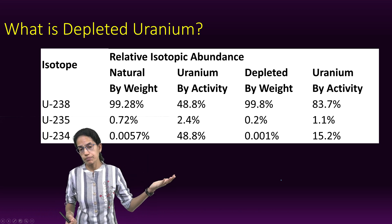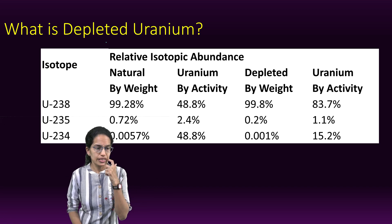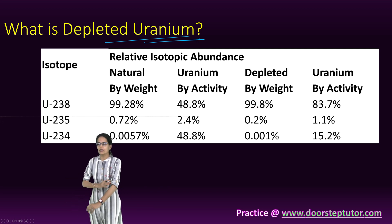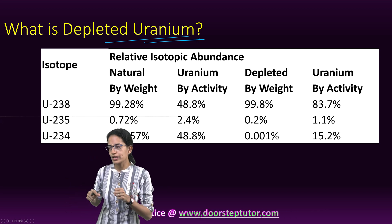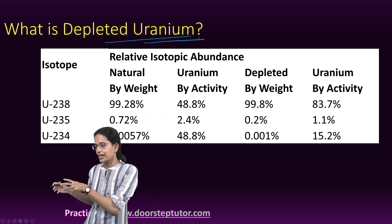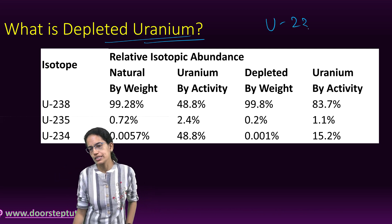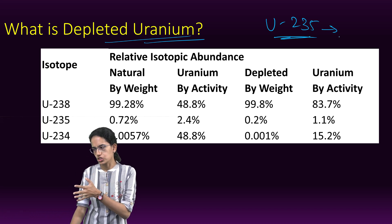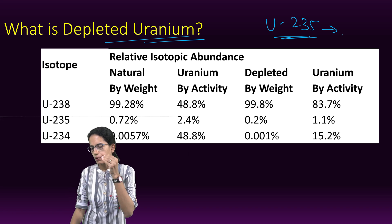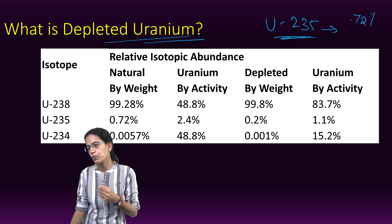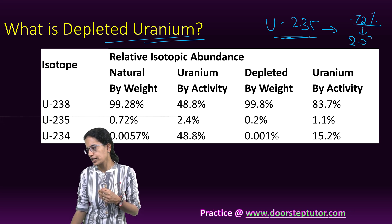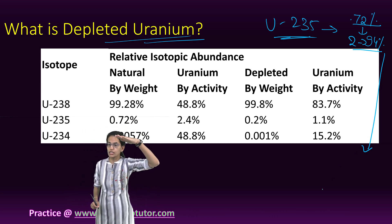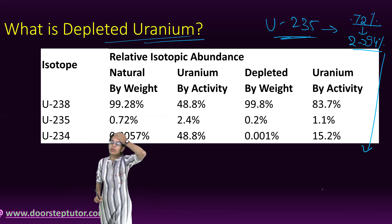Now, what is depleted uranium? In order to produce fuel for nuclear reactors, uranium is enriched. U-235, the isotope responsible for nuclear fission, gets enriched. The proportion in natural uranium, which is around 0.72%, is increased to 2% to nearly 94% by mass. This process is called enrichment of uranium.